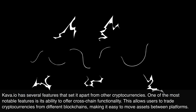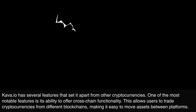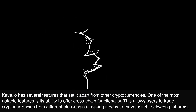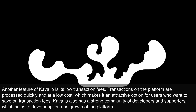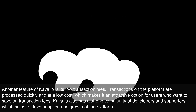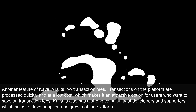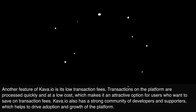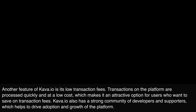Kava.io has several features that set it apart from other cryptocurrencies. One of the most notable is its ability to offer cross-chain functionality, allowing users to trade cryptocurrencies from different blockchains and easily move assets between platforms. Kava.io also features low transaction fees — transactions are processed quickly and at a low cost. Additionally, the platform has a strong community of developers and supporters, which helps drive adoption and growth.